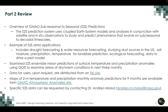Some examples of S2S data applications include drought forecasting and water resources forecasting, studying dust sources in the US, soil moisture, precipitation and temperature prediction for landslide prediction, ecological forecasting, and data to drive a best model. We examined S2S ensemble mean predictions of surface temperature and precipitation anomalies in QGIS, and we identified areas of dry and warm conditions that will evolve in the next two to three months.